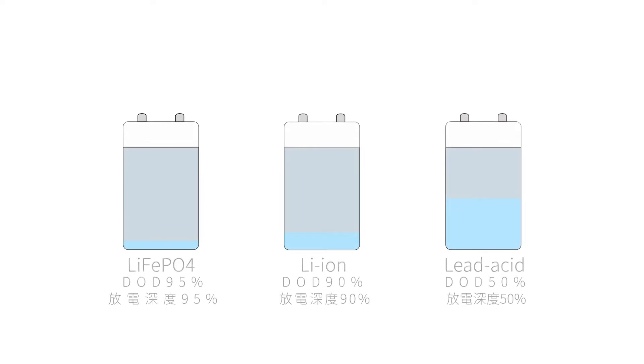In terms of depth of discharge, lead-acid batteries are very uneconomical. Lithium-ion phosphate batteries perform best, then lithium batteries, and finally lead-acid batteries.